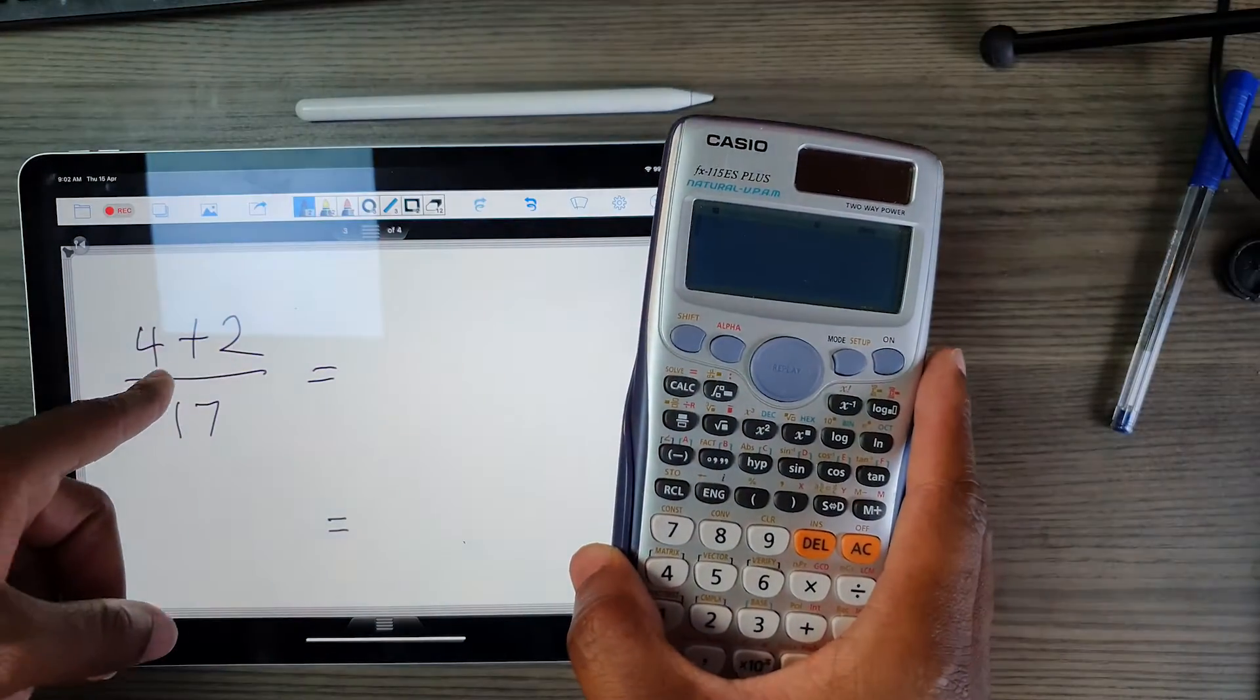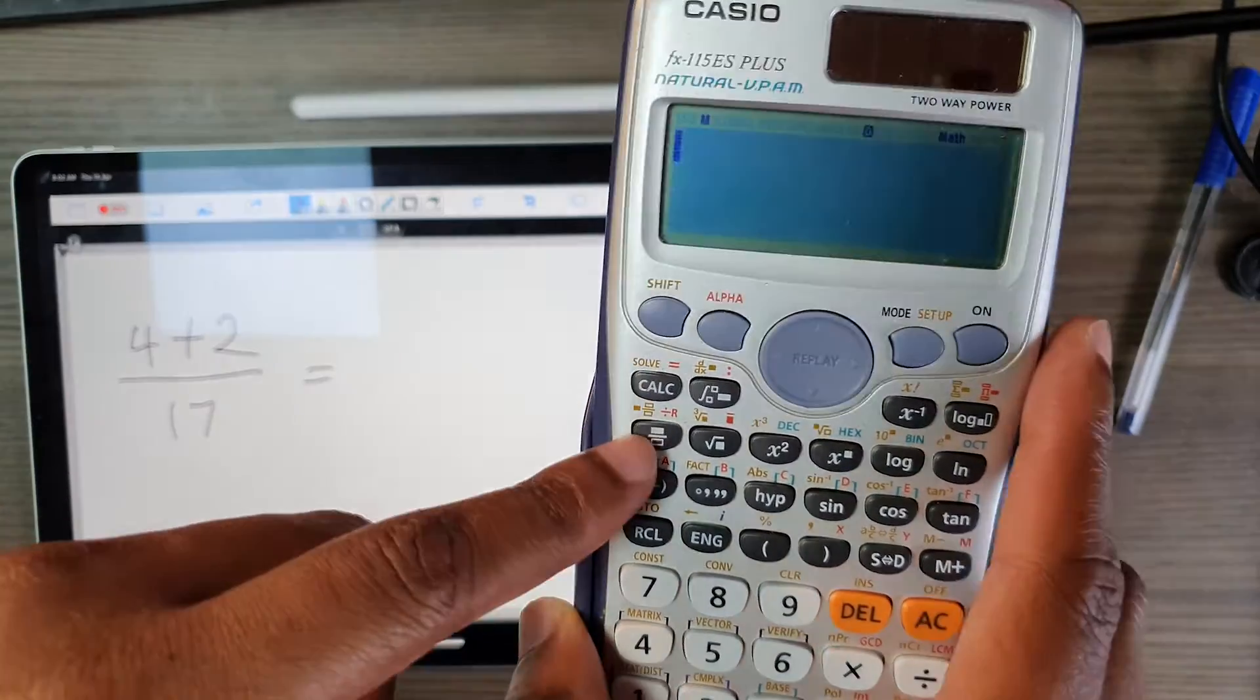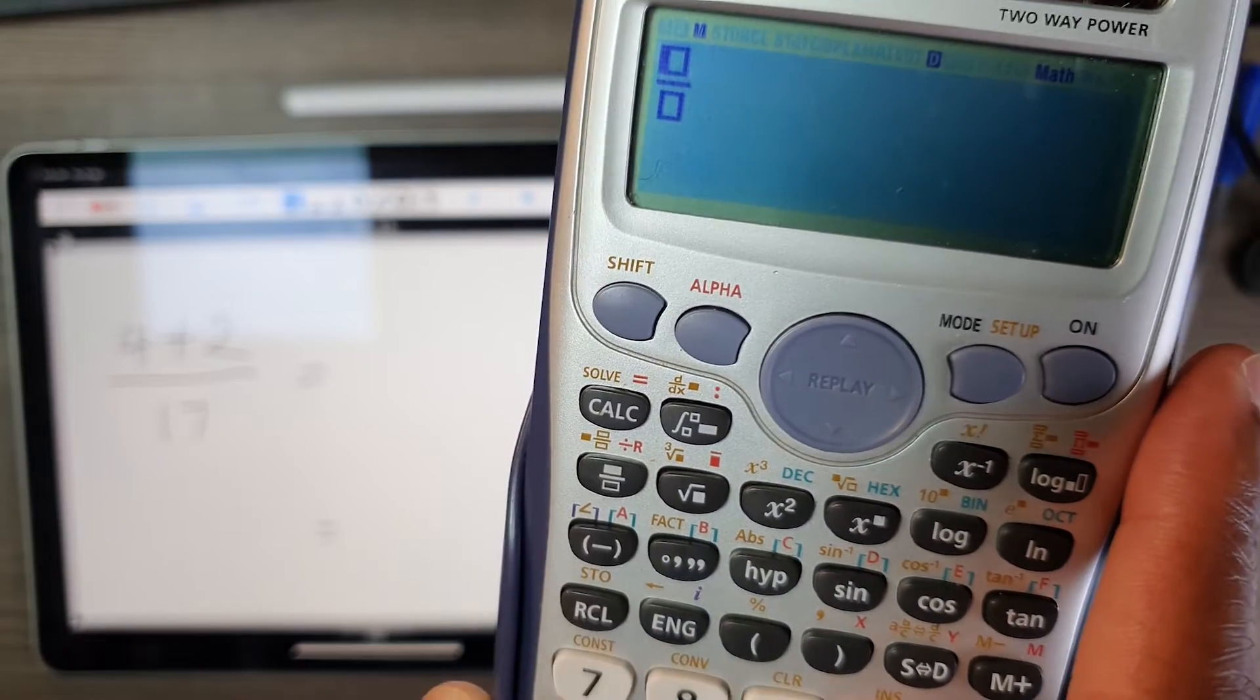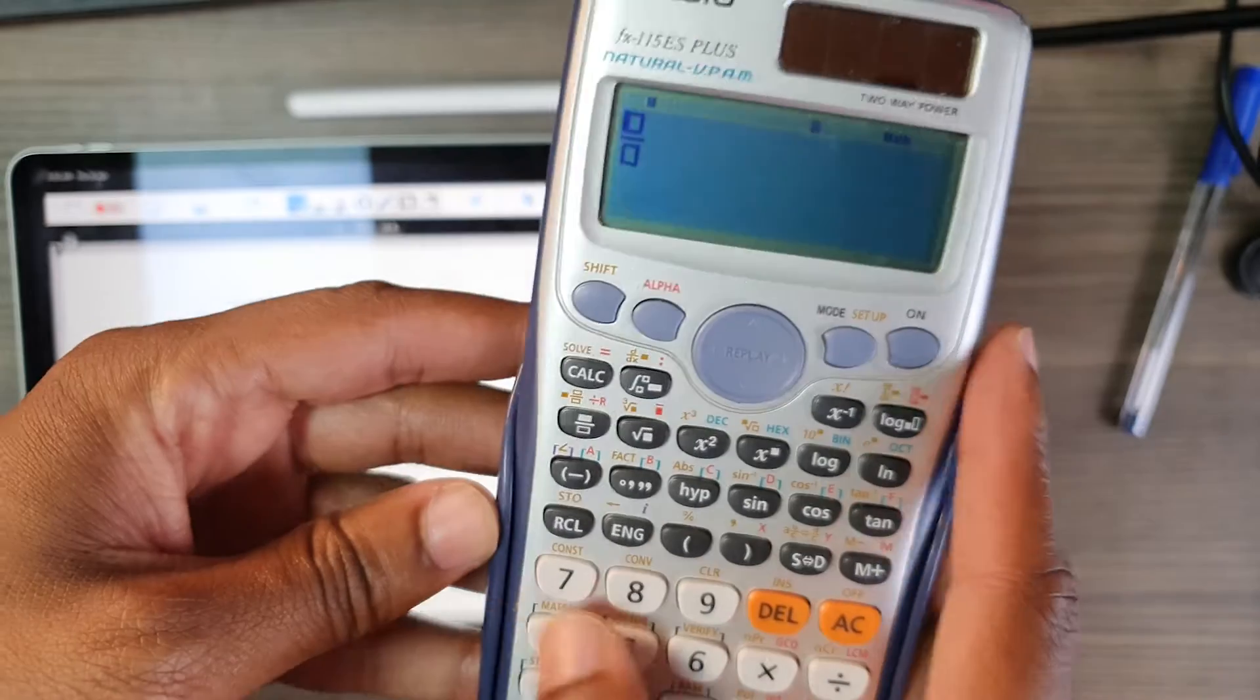The fastest way to do a simple fraction like this on the calculator is to make use of this button here. I'm going to press this button and put the fraction in.